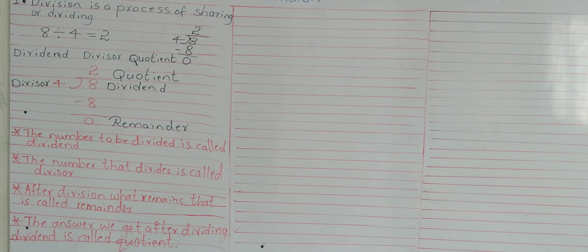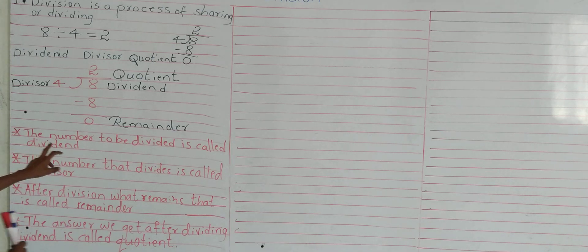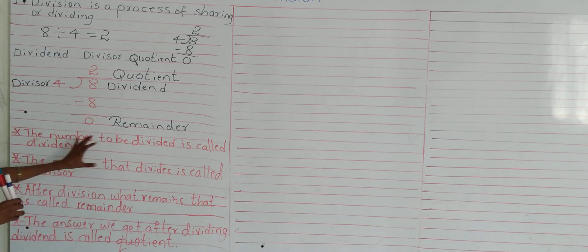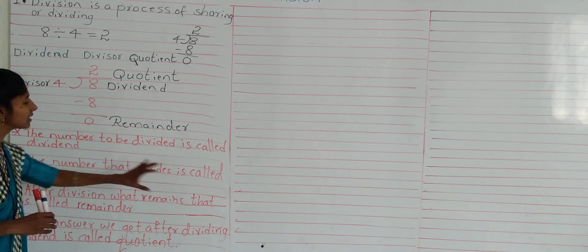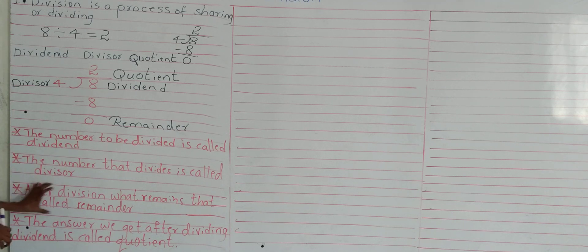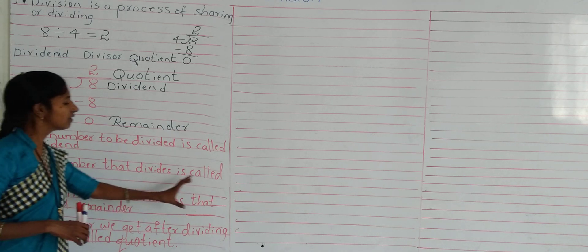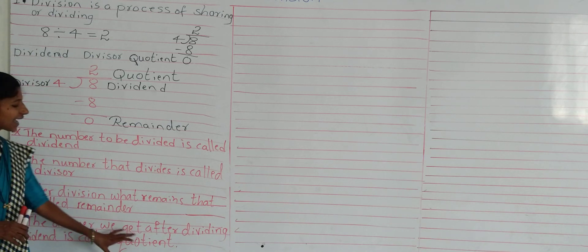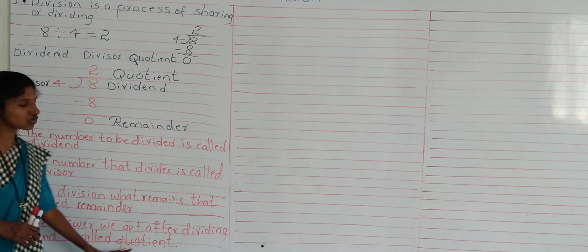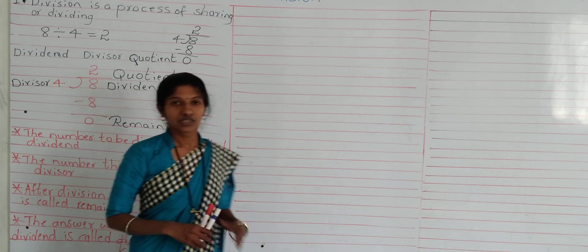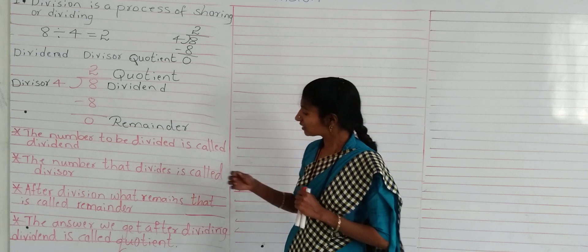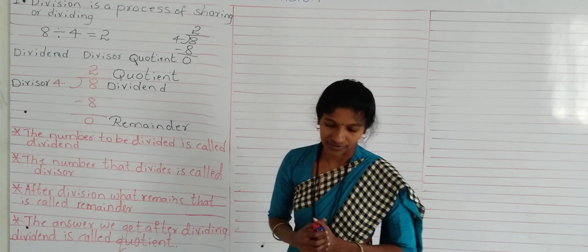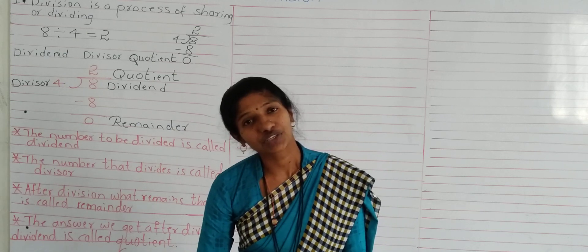Let's recall once again. Division is a process of sharing or dividing. The number to be divided is called the dividend. The number we divide by is called the divisor. After the division, what remains is called the remainder. The answer we get after dividing the dividend is called the quotient.